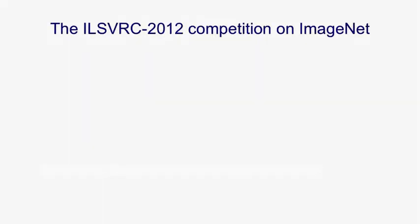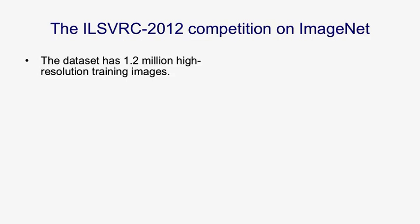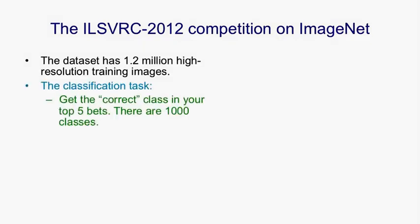There was a recent competition on a database called ImageNet. ImageNet actually has many more than a million images, but a subset of 1.2 million images was chosen. The classification task was to correctly label those images. The images were hand-labelled with a thousand different classes, but this wasn't very reliable — there could be an image that has two of those thousand objects in it, and only one of them is labelled.